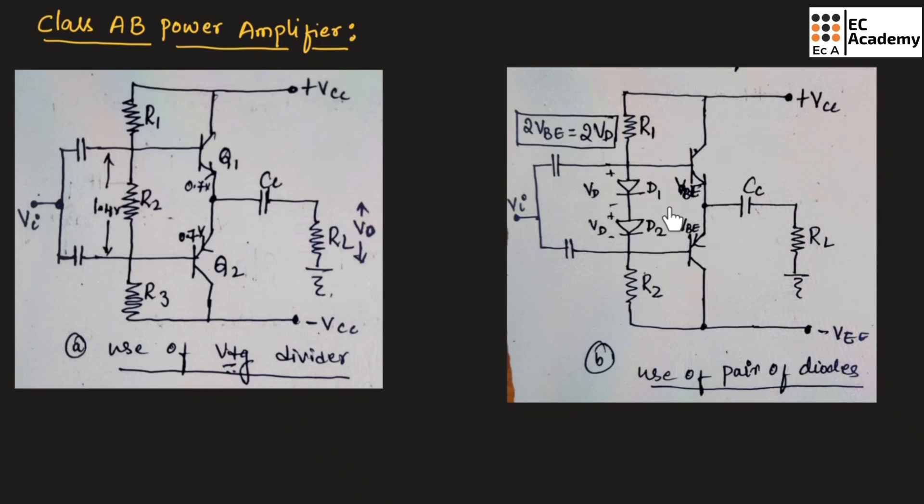...we can use two diodes, D1 and D2, in place of resistor R2 as shown in this figure B. In this figure, we are using two diodes in place of resistor R2. As temperature changes, the diode characteristics get changed and it will maintain the necessary biasing that is required to overcome the distortion.